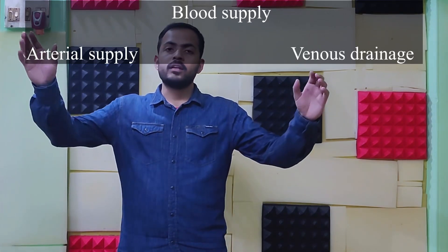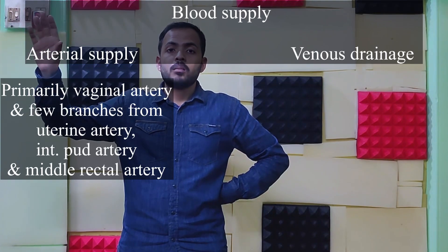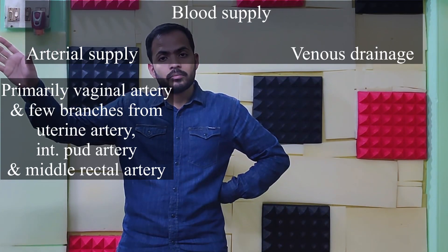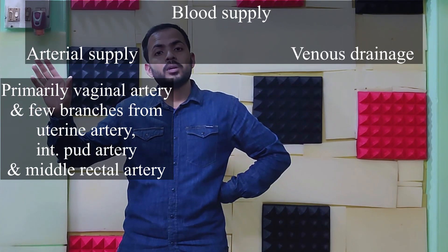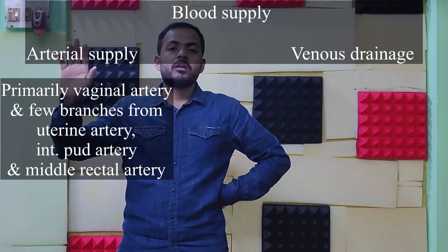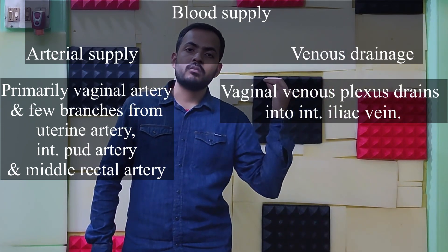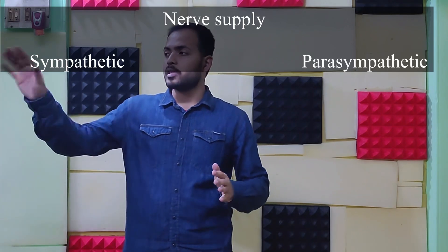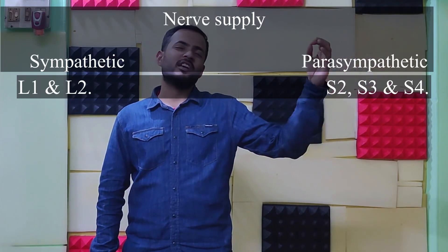For blood supply of the vagina: arterial supply comes primarily from the vaginal artery, a branch of the internal iliac artery, along with branches from the uterine artery, internal pudendal artery, and rectal middle lateral arteries. Venous drainage goes via the vaginal venous plexus into the internal iliac vein. Nerve supply includes sympathetic from L1–L2 and parasympathetic from S2, S3, S4. This concludes the topic of the uterus, cervix, and vagina.